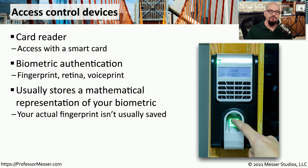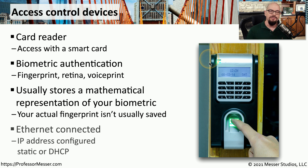These biometric readers aren't usually storing a picture of your fingerprint. They're instead storing a mathematical representation of the fingerprint. The next time you use that finger to open the door, it performs that same mathematical function to see if those fingers match. These devices are usually connected to the network through ethernet, and they usually obtain an IP address using DHCP or through a static assignment.